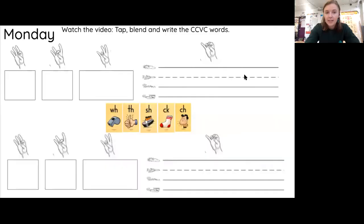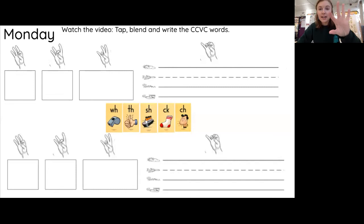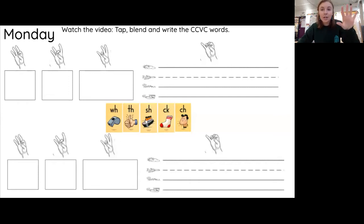We're going to use those today when we write these words. Take out your paper. The first word we're going to write is 'chop.' The first sound we hear in chop is CH. Say CH. The next sound is AH. The last sound is P. CH — AH — P — chop. You do it.